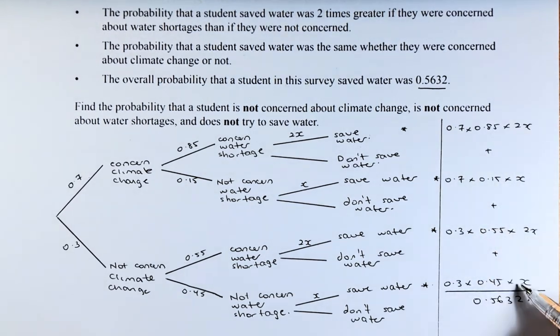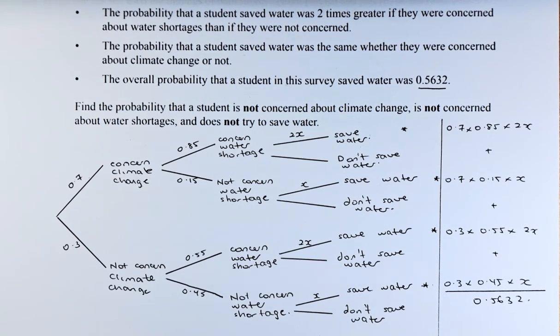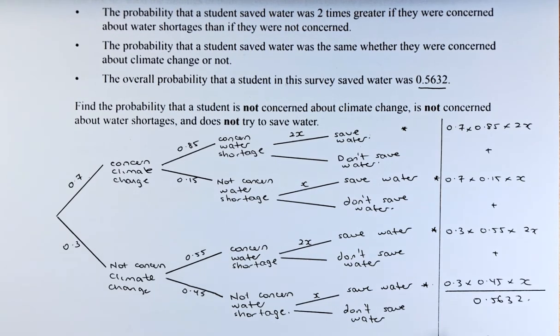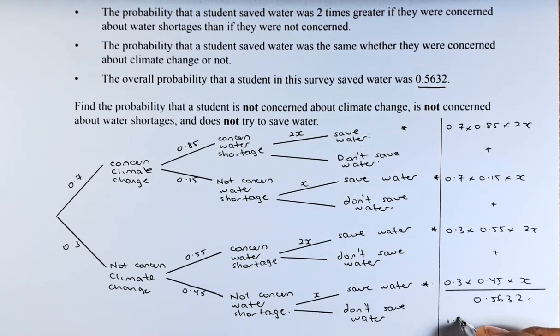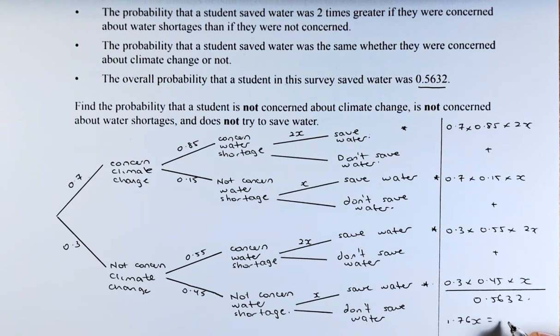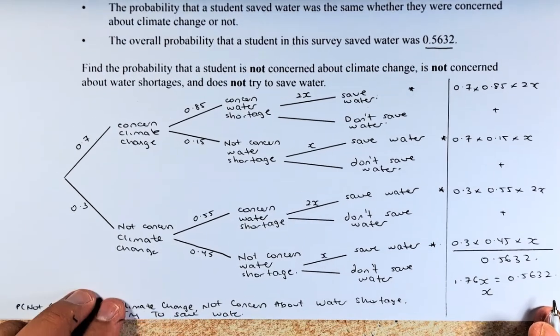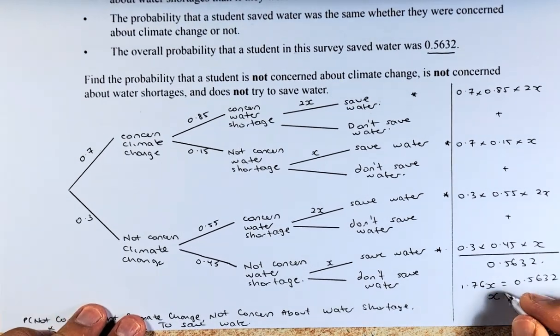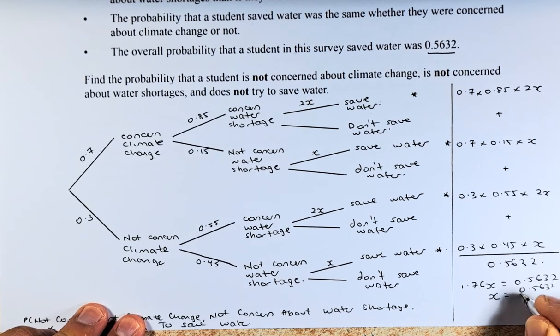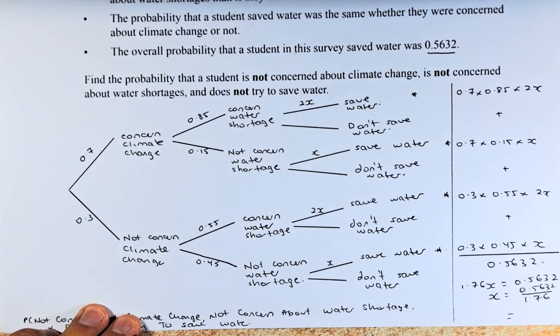So if you add them up together, what you will get is 1.76x that is equal to 0.5632. And to solve x algebraically, you just take 0.5632 divided by 1.76 and the answer is going to be 0.32.